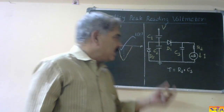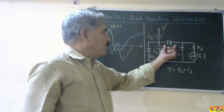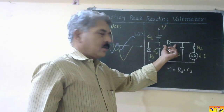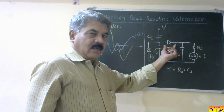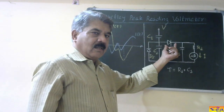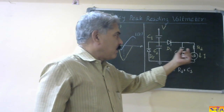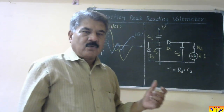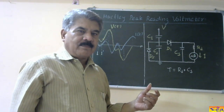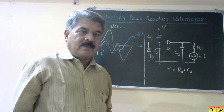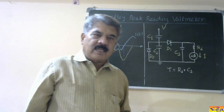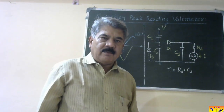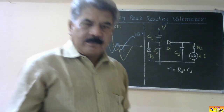Now, the source of error in this method is that some voltage drops across diode D1, so that voltage will not be reflected at the output. That is the source of error in this method. Now let us take a numerical example on this method.